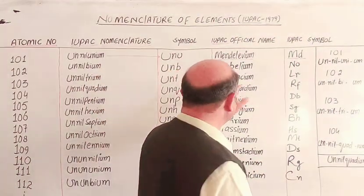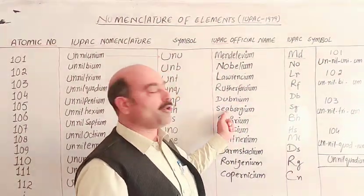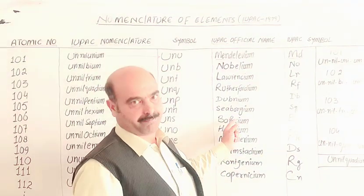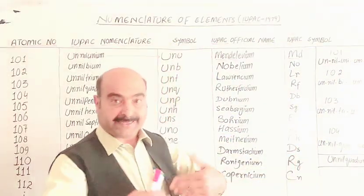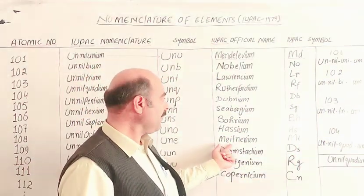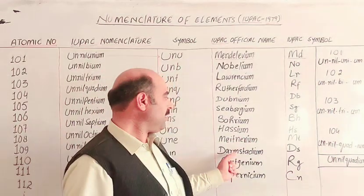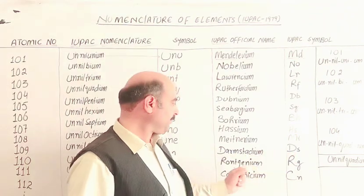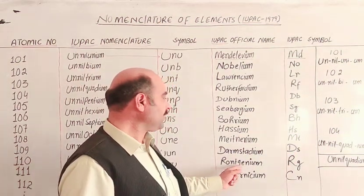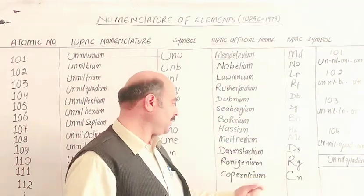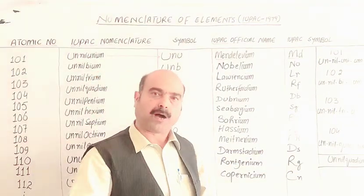The next elements are: Dubnium, then Borgium (Seaborgium), then Bohrium with symbol Bh, then Meitnerium with symbol Mt, then Darmstadtium with symbol Ds, then Roentgenium, and then Copernicium with symbol Cn. That is the complete list of officially named elements in this range.